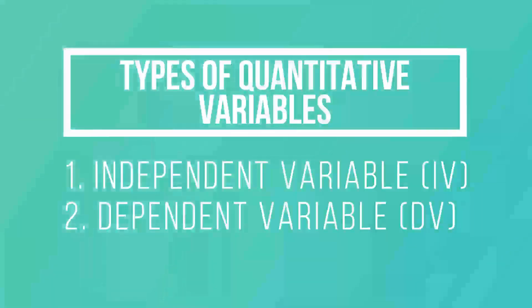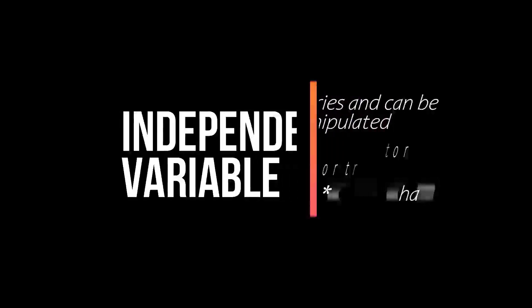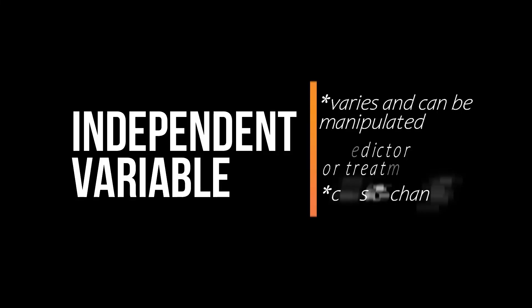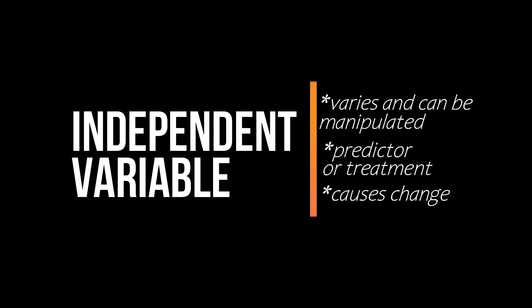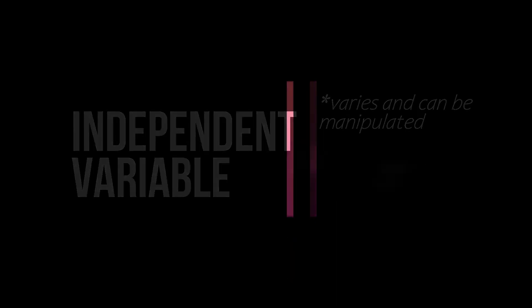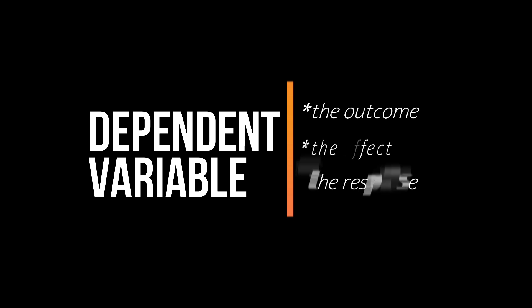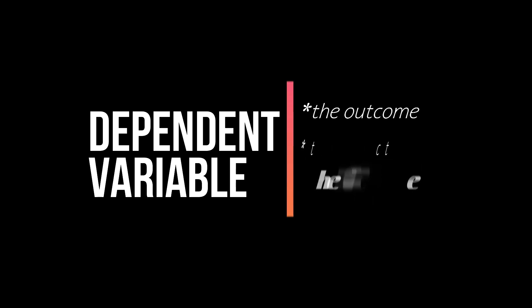There are two major types of quantitative variables. One is the independent variable — the variable that is being manipulated or the one that varies. It is sometimes called the predictor, as it will predict the outcome, or the treatment variable, because this variable causes a change in the dependent variable. The other one is the dependent variable, known as the outcome, the effect, or response variable, because it refers to the result of the study through the changes created by the independent variable.